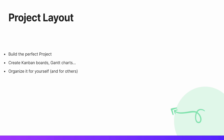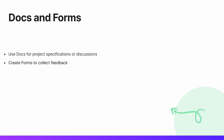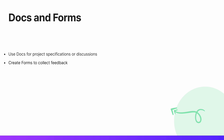Then we'll talk about the project layout — essentially how to create a perfect project. So how to create Kanban boards, Gantt charts, and how to organize the project for yourself and also for others. Then we'll talk about docs and forms, how to use docs for project specification or discussion, and how to create forms to collect feedback. Then we'll dive into advanced features including automations, and I'll also show you a secret new feature.